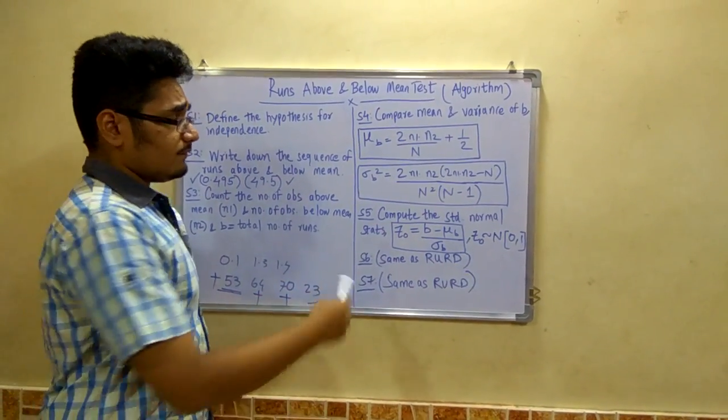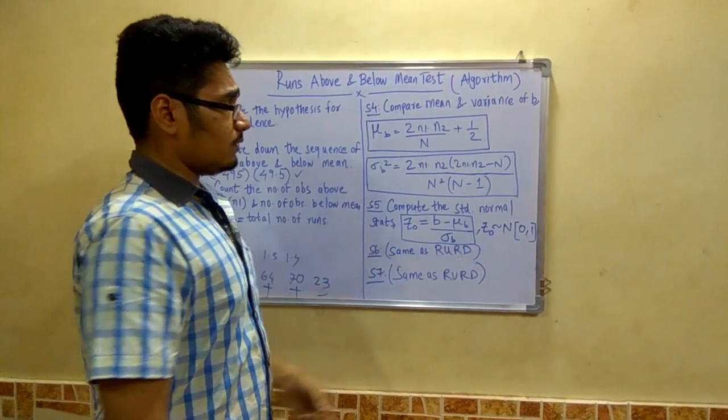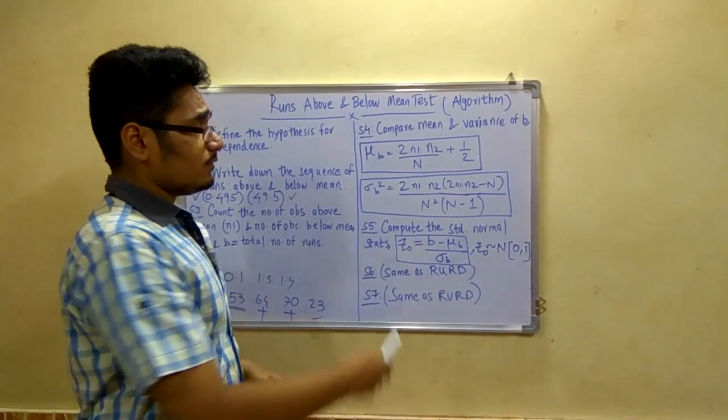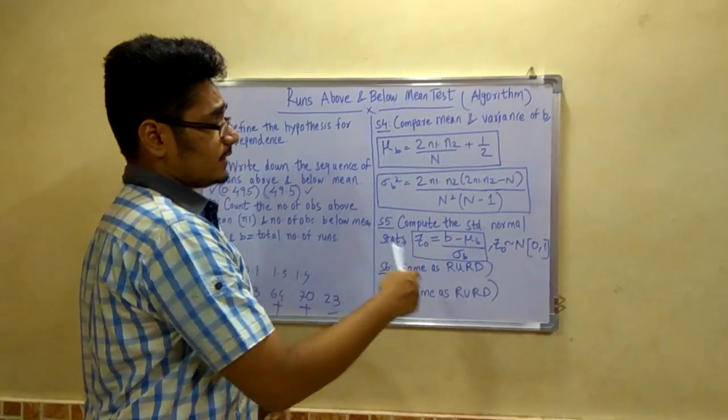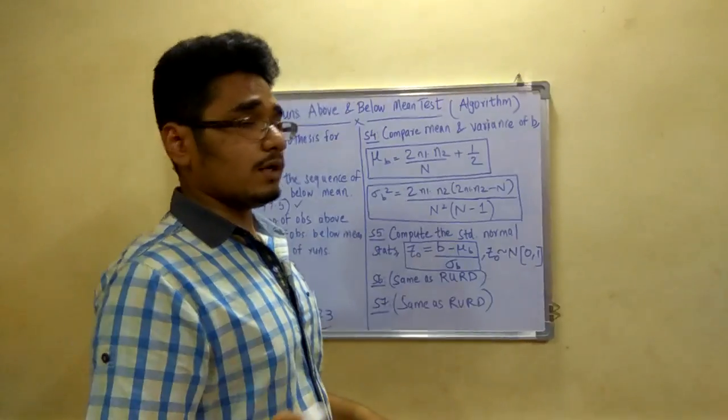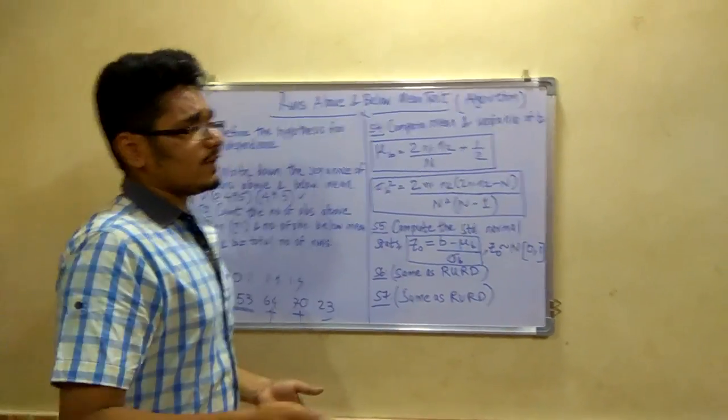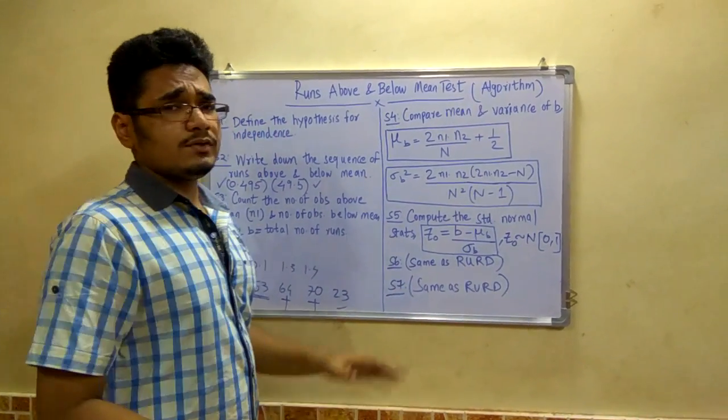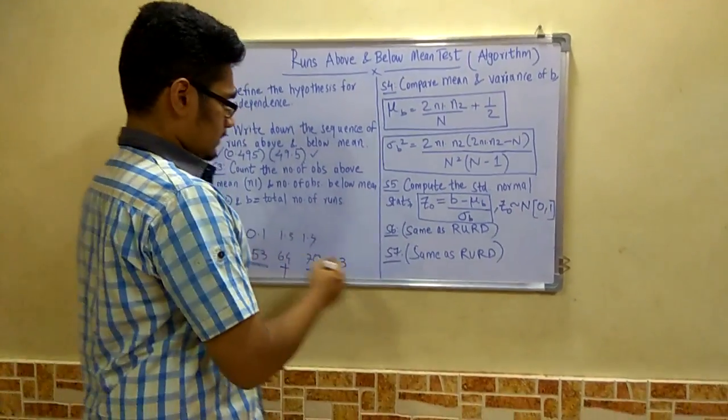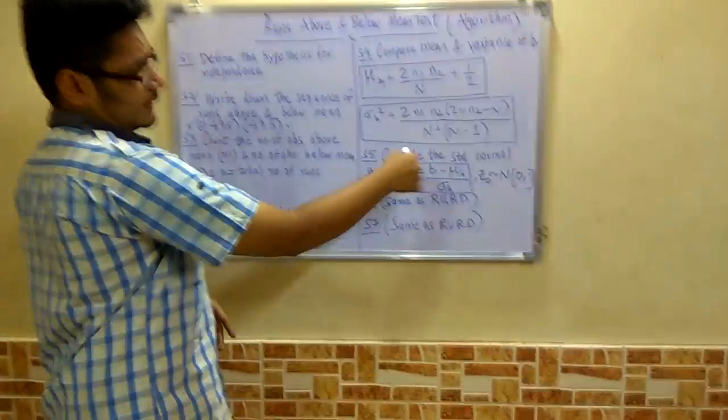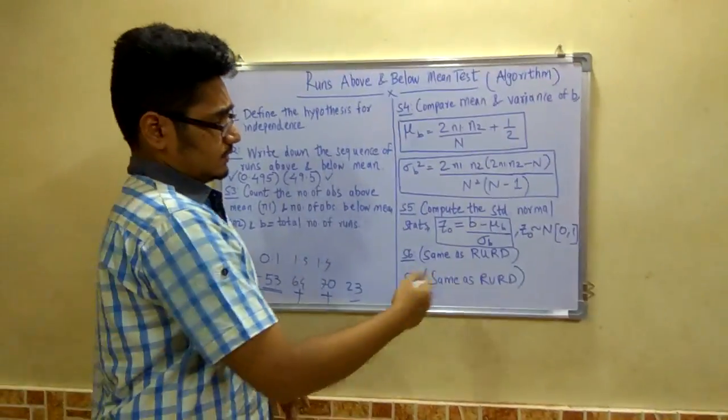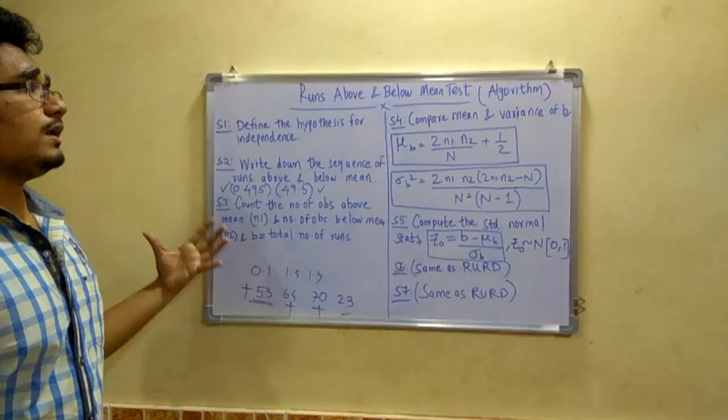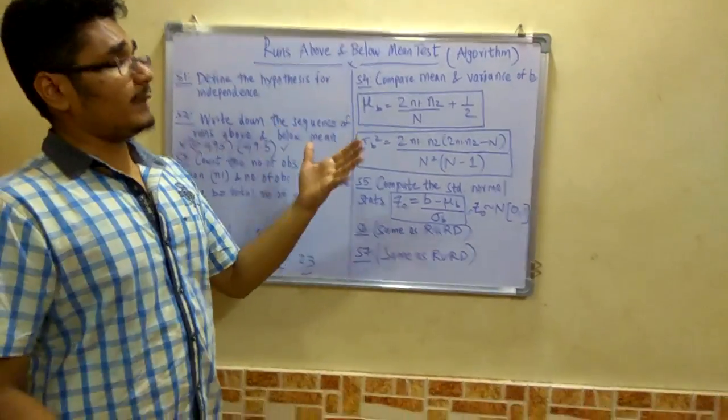And now step 6 and step 7 remain same as the runs up runs down. That is you have to calculate Z alpha by 2 and minus Z alpha by 2 for a given level of significance. That is for alpha as 0.05 or any other value. They usually give it as 0.05. And step 7 you have to compare whether this computed value of Z0 lies within that range. So this is the algorithm basically of runs above and below mean.